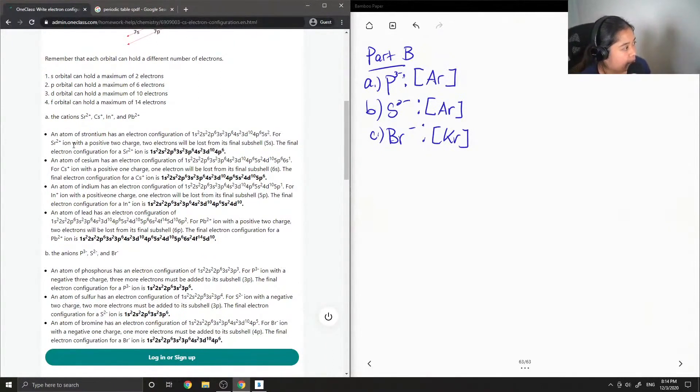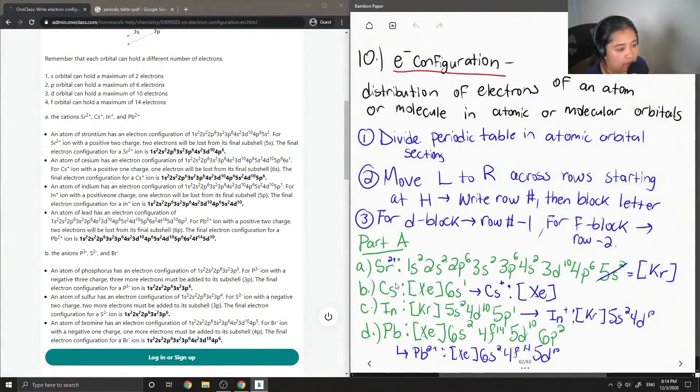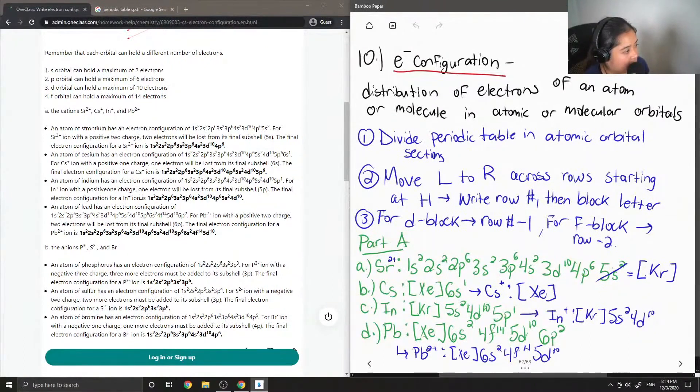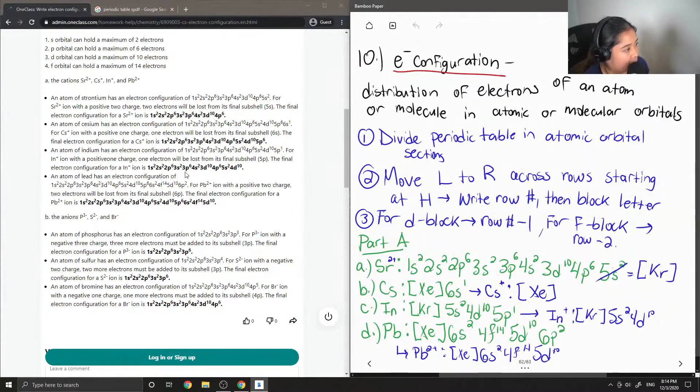So an atom of strontium has an electron configuration. So they wrote the long version for the first one as well. Cesium has an electron configuration. So again, this is the long version. But it would still be the same. It just kind of gets confusing to read. But basically, this looks correct. Indium, 4d10. Yep, so that's what I got as well. And then lead, 6s2, 4f14, 5d10.